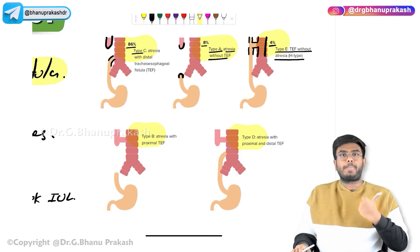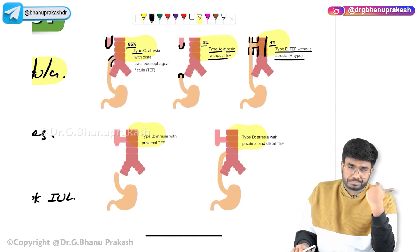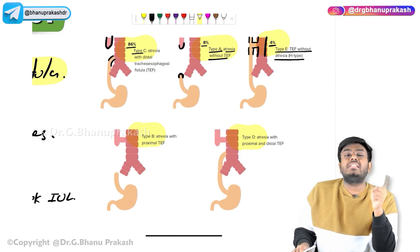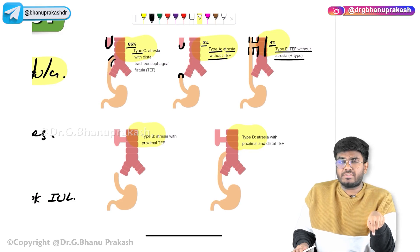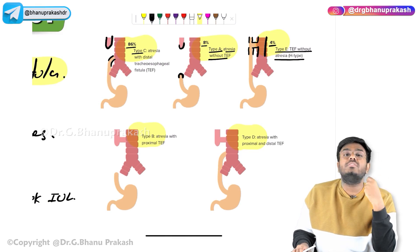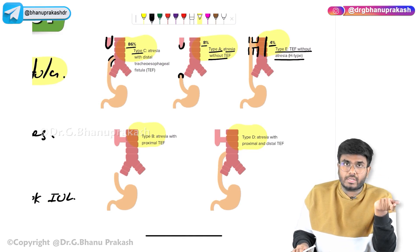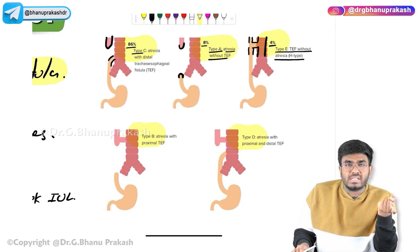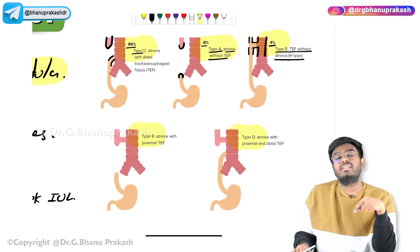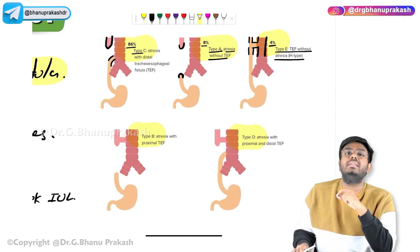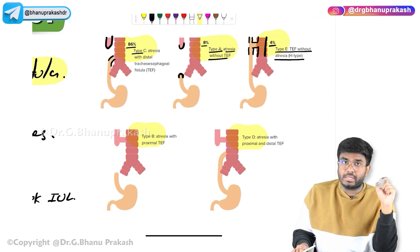To summarize the key exam points: the most common type is Type C with a distal tracheoesophageal fistula. Type A has no fistula at all — both proximal and distal esophagus have atresia. And in Type E, there is no atresia at all.